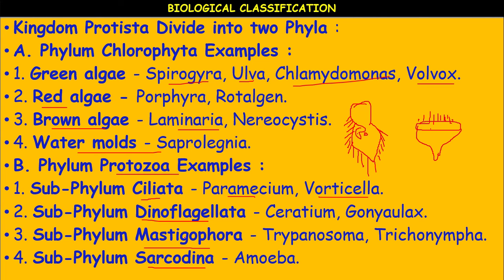Dinoflagellates are mostly marine and photosynthetic, though some forms occur in freshwater. In most forms, the cell has stiff cellulose plates and they are motile with two dissimilar flagella. Some marine dinoflagellates show bioluminescence — they glow during night time. Examples that show bioluminescence include Noctiluca, Gonyaulax, Pyrocystis, and Pyrodinium.